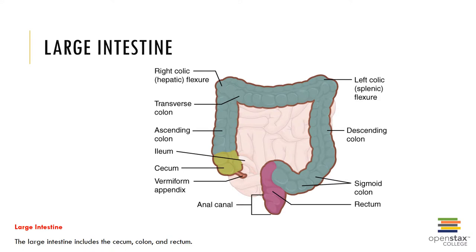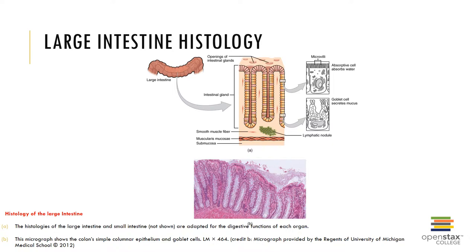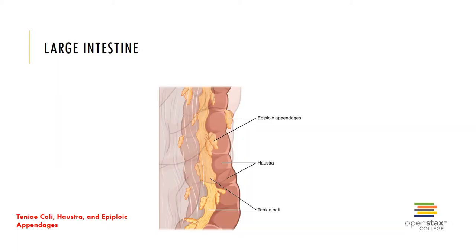The large intestine is shown here. The microscopic anatomy of the large intestine shows simple columnar epithelium for absorption of water and electrolytes, except in the rectum and anal canal where it is predominantly stratified squamous epithelium for protection against abrasion. No villi, plicae circularis, or enzyme-secreting cells are found here. Large numbers of goblet cells produce mucus to lubricate the feces. Bacterial flora synthesizes vitamin B and most of the vitamin K that the liver requires to make blood clotting proteins.